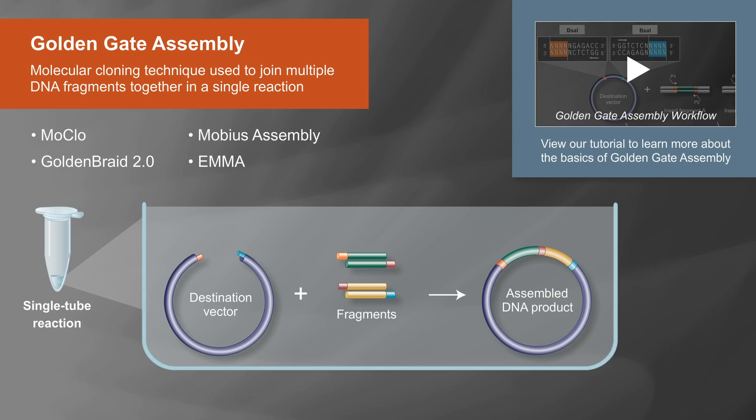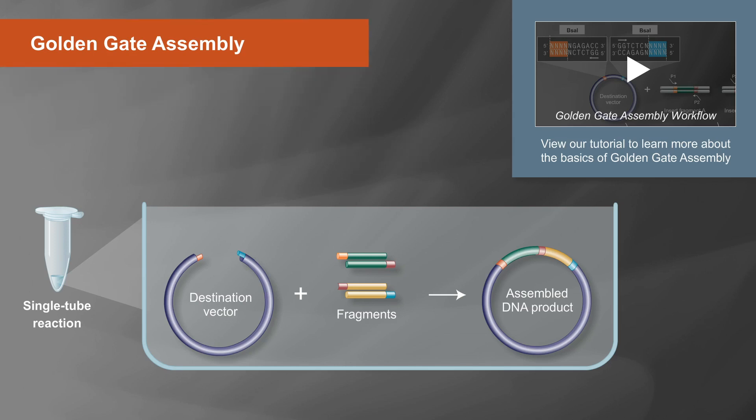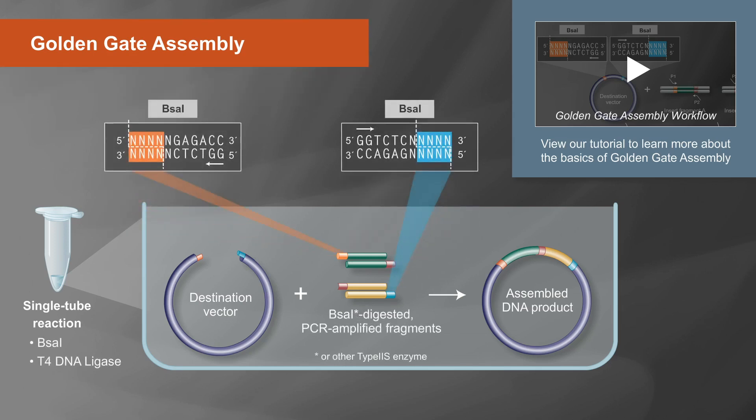These methods are efficient and cost-effective means to generate recombinant DNA construct variants. The method utilizes type 2S restriction enzymes, which allow multiple fragments to be assembled in a single reaction, resulting in seamless assembly.